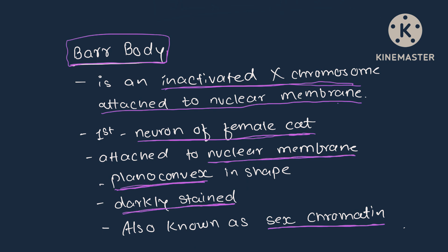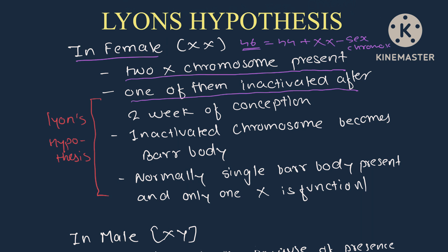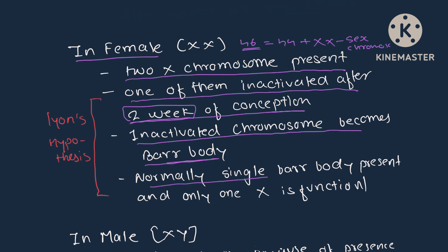In females, 46 chromosomes are present, out of which 44 are autosomes and XX are the sex chromosomes. Of the two X chromosomes present in females, one is inactivated after two weeks of conception. The inactivated chromosome becomes bar body, and normally one single bar body is present, with only one X chromosome functional in females.